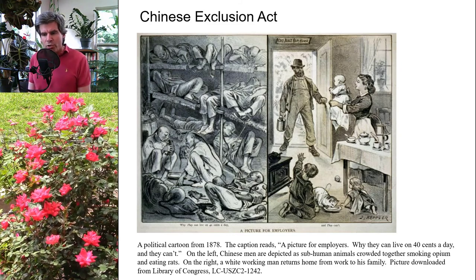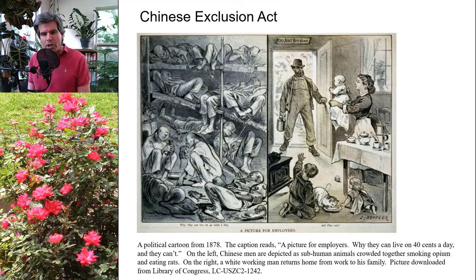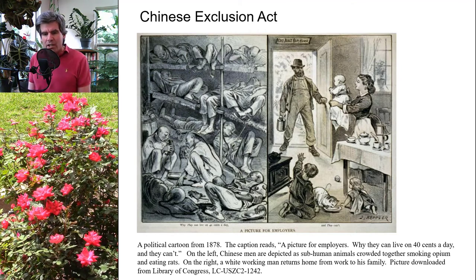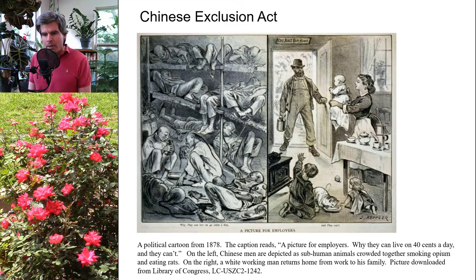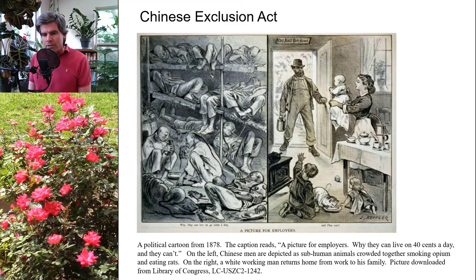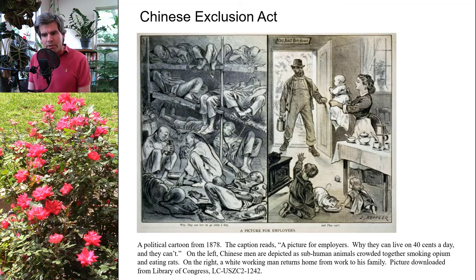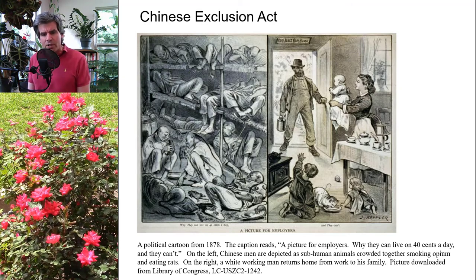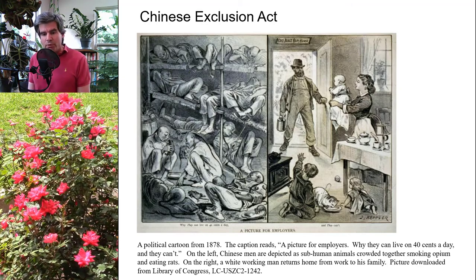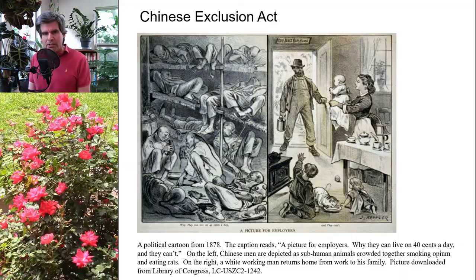The Chinese Exclusion Act can be viewed as the first law in the United States designed to limit immigration — in this case entirely prohibiting immigration of laborers from China. This legislation was driven by people's fears that this undesirable immigrant population would corrupt the United States.